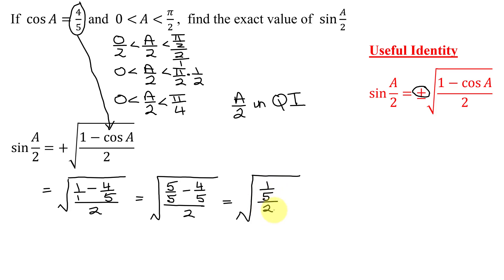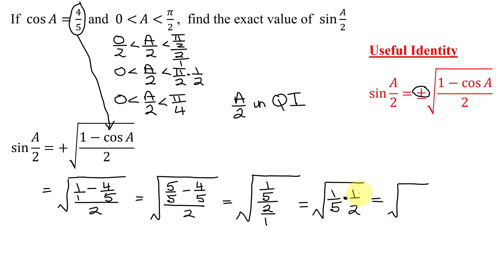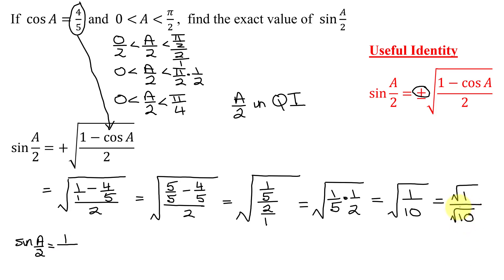And I'm going to divide 1 fifth by 2. I turn 2 into a fraction — 2 over 1 — so I have the square root of 1 fifth divided by 2 over 1. Dividing fractions means multiplying by the reciprocal, so the reciprocal of 2 over 1 is 1 half. I get the square root of 1 times 1 over 5 times 2, which is 1 over 10. So I get the square root of 1 over the square root of 10, giving sine of A over 2 equals 1 over the square root of 10.